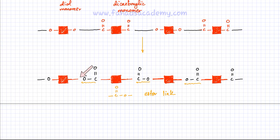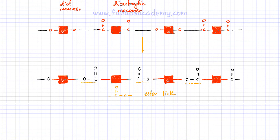Every polyester contains these ester links, which appear in a repeated fashion whenever diols and dicarboxylic acids join together. You're going to get thousands of different ester links in a single polymer when thousands of different monomers join together.